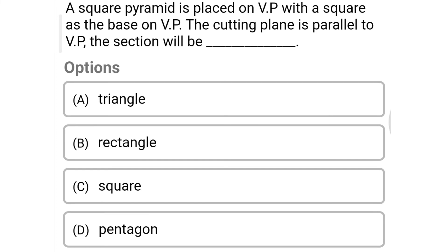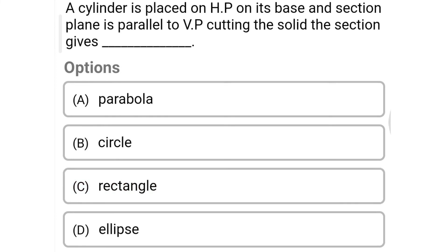Next question: a square pyramid is placed on the vertical plane with the square as the base; the cutting plane is parallel to the vertical plane. The section will be — option A: triangle, option B: rectangle, option C: square, option D: pentagon. The correct answer is option C: square.